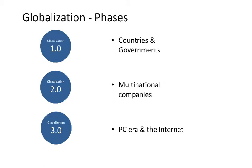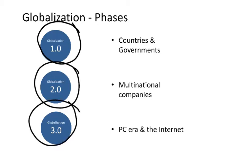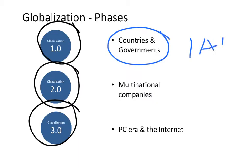In globalization we can differentiate three main phases: 1.0, 2.0, and 3.0. The main drivers of globalization 1.0 were countries and governments. Examples from this period include the creation of the United Nations and, within air transport, the creation of IATA. So those international organizations were the main drivers.